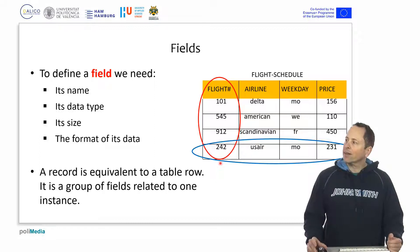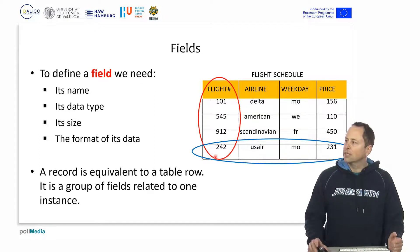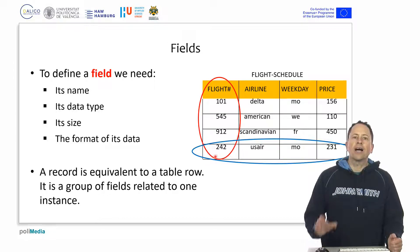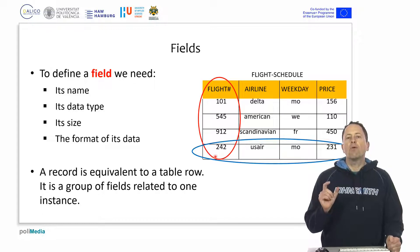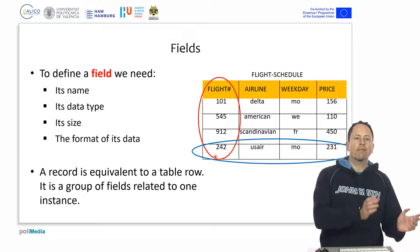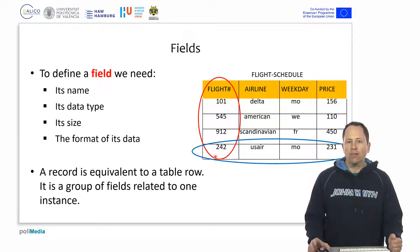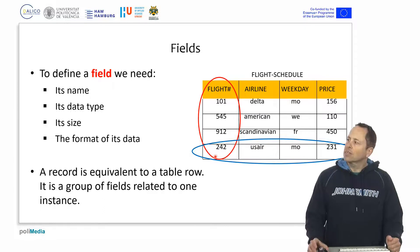Or if the data that can be stored in this field must come from a list of possible flights. If we are filling in at what time flights depart on a day, in the field flight number, we cannot have any number that is not defined in the flight code table, because it would be absurd. If there is no flight 5,555, we cannot store it on the table. That can be defined.